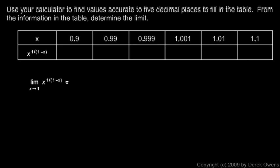And here's one more. Again, use the calculator to find values accurate to five decimal places and fill in the table. And then from the information in the table, determine the limit. So here's our expression, x to the power of 1 over 1 minus x. And we want to find the limit of that expression as x approaches 1.